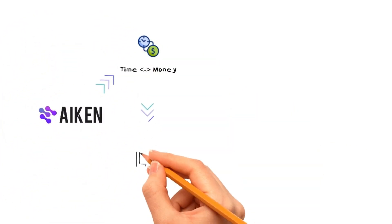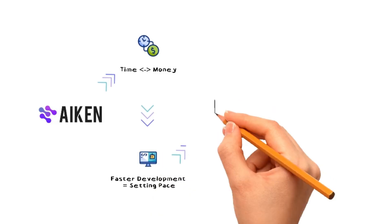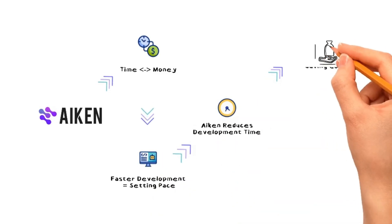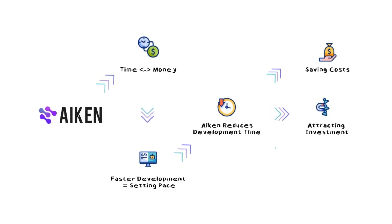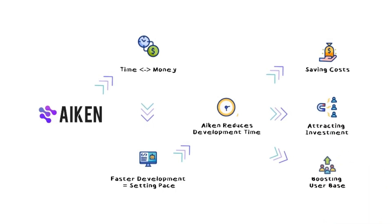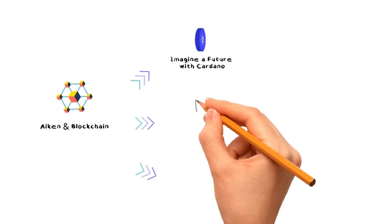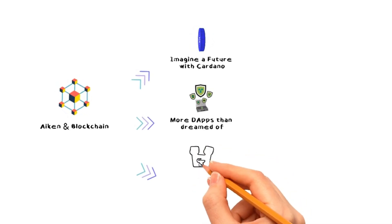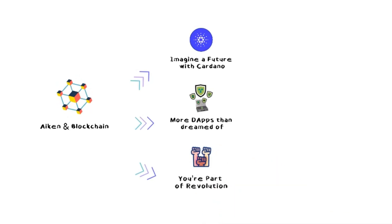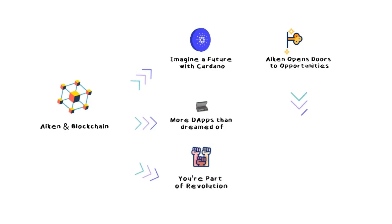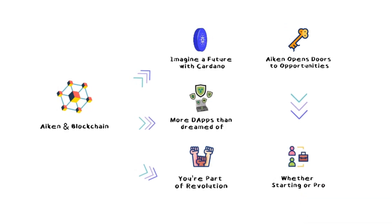Every tick of the clock is money spent or saved. In the world of blockchain, faster development isn't just about keeping pace — it's about setting the pace. Aiken is your ally here, reducing development time, shaving off costs, attracting investment, and boosting the user base. Imagine a future where Cardano boasts more dApps and smart contracts than we dared to dream, and you, with Aiken as your co-pilot, are part of this revolution. Whether you're just starting or a seasoned pro, Aiken opens doors to opportunities that were once just out of reach.